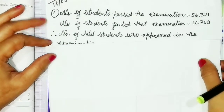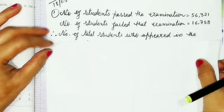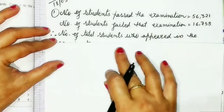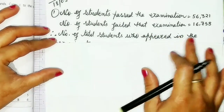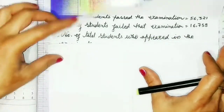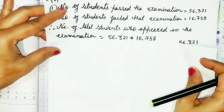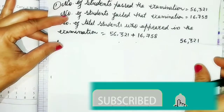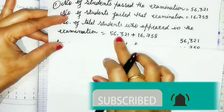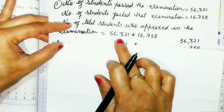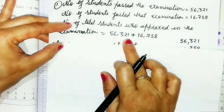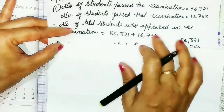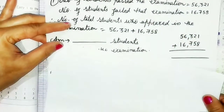Therefore, we have to find the total number of students who appeared in the examination. For that, we will add 56,321 plus 16,758.